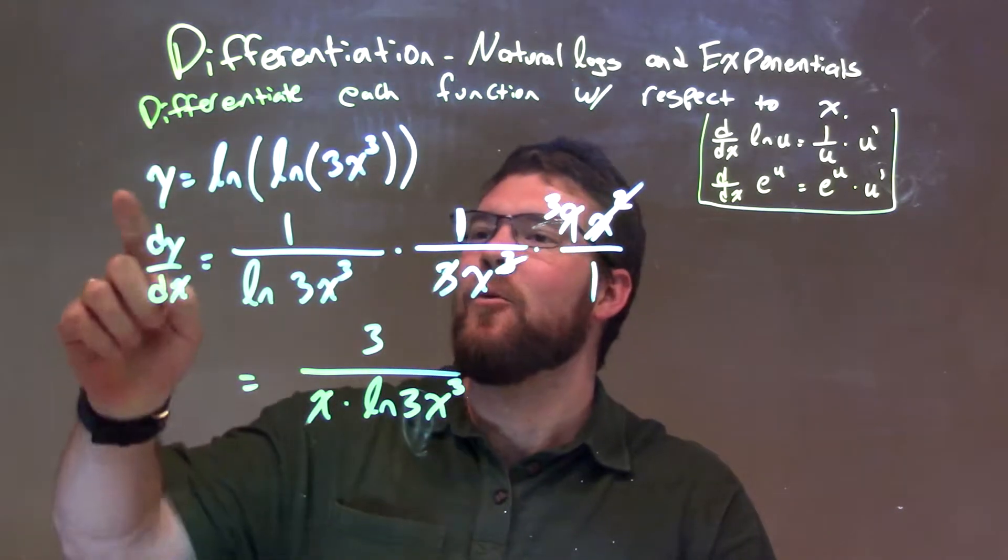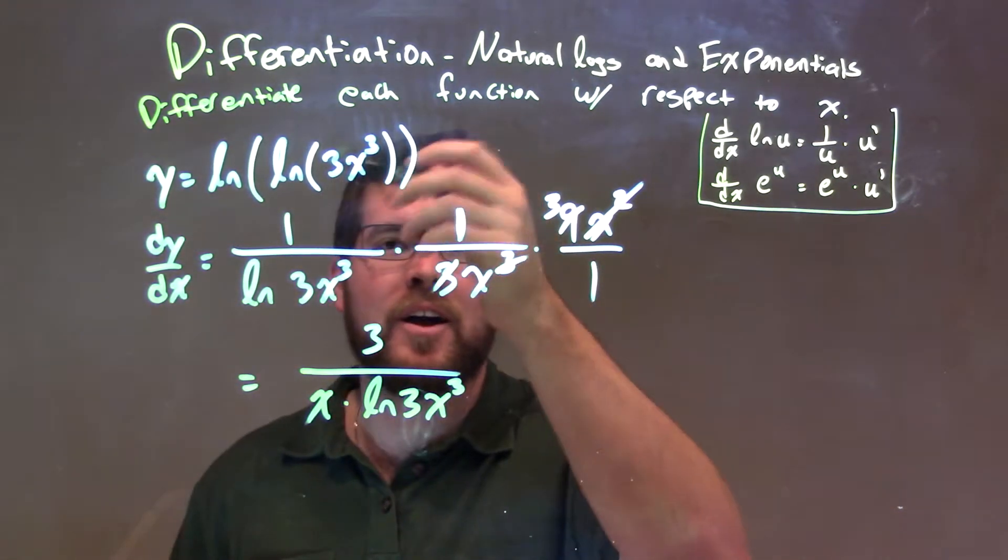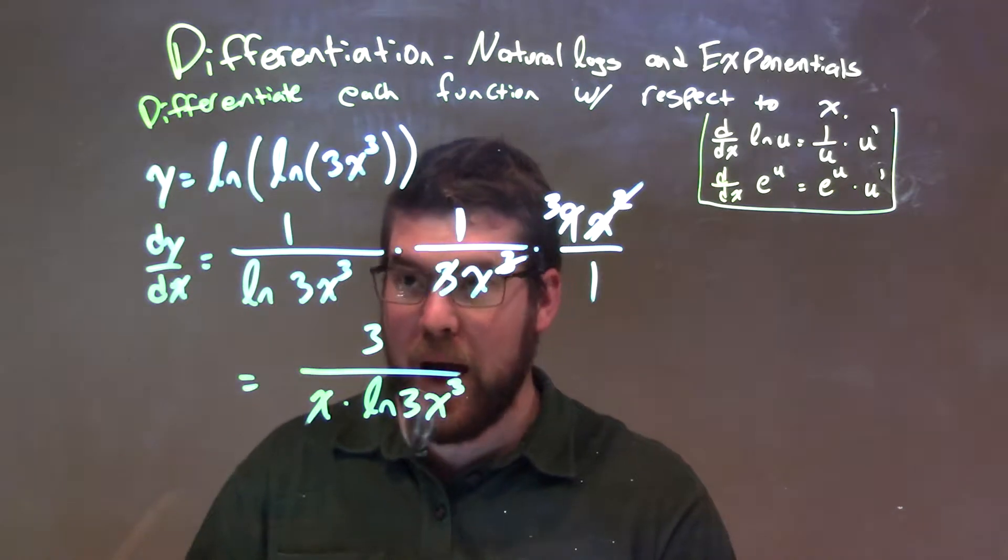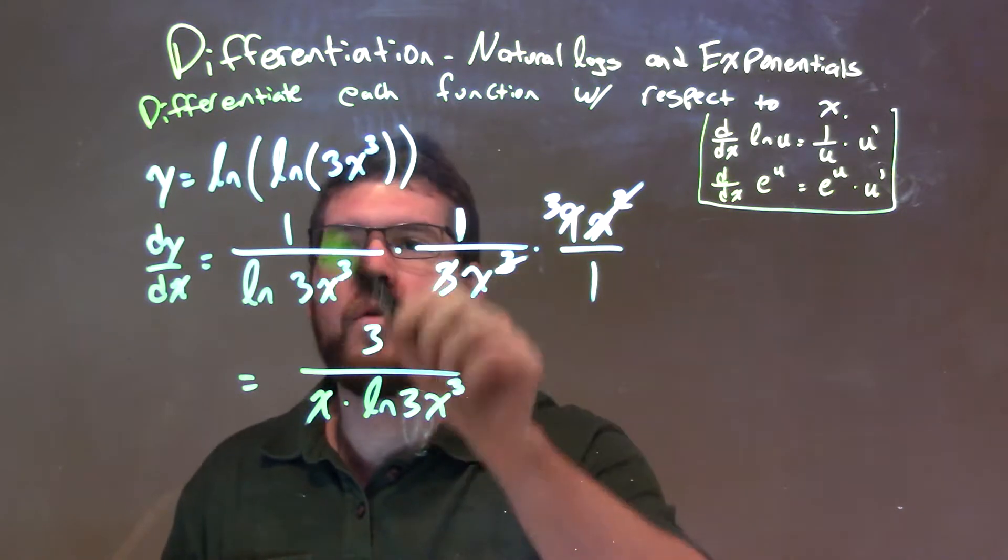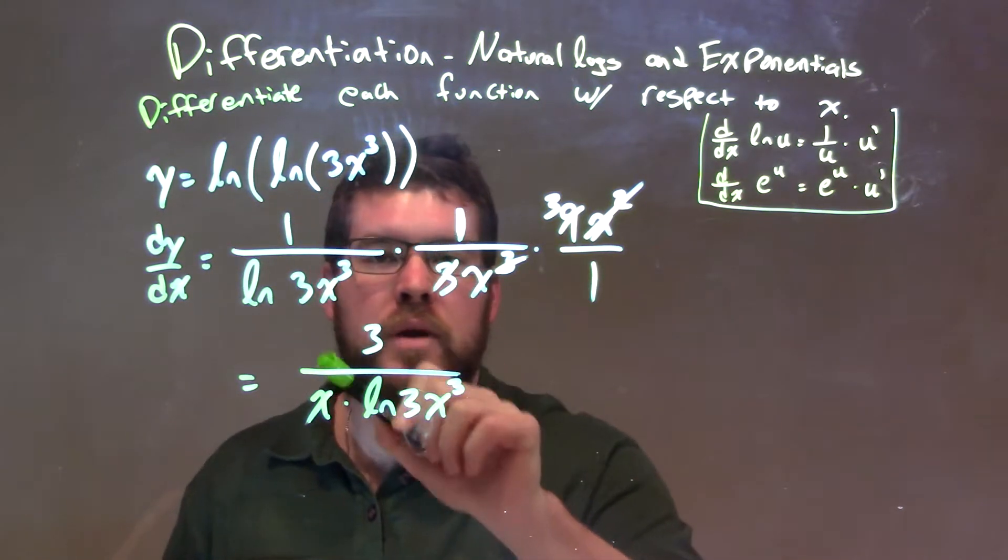So, let's return. y equals the natural log of the natural log of 3x to the third power. Well, when we take the derivative, we're going to chain rule. So in the natural log rule, 1 over the inside, which is just natural log of 3x to the third.